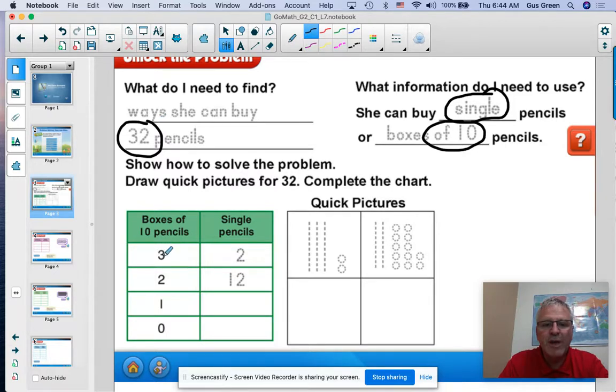For example, she could get three boxes of pencils and two singles, and you can show that with a quick picture right here. Three 10s and two ones is 32.